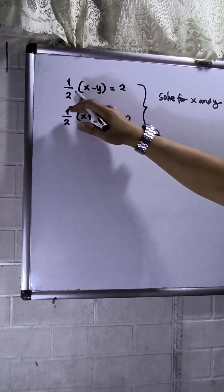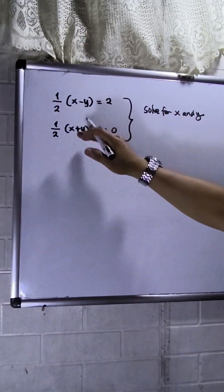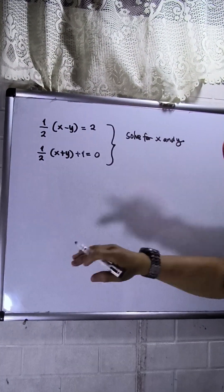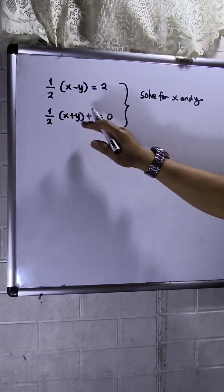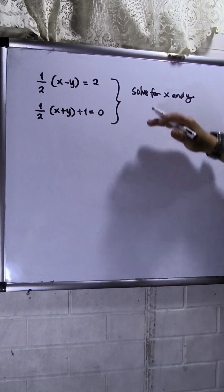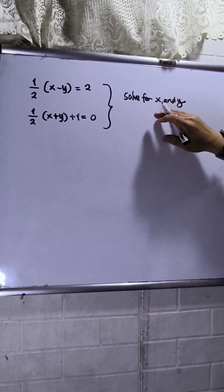So I have here one half circle brackets x minus y equals to 2. Then the second will be one half circle brackets x plus y plus 1 is equals to 0. My task is to solve the value of x and y.